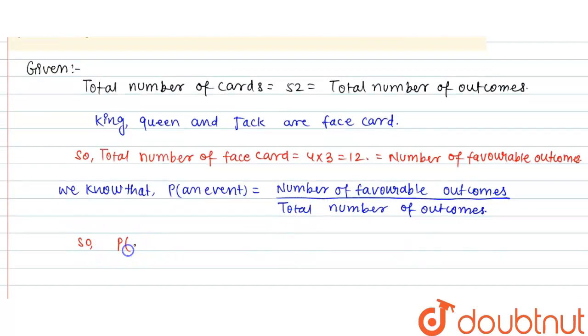So probability of a face card is equal to 12 upon 52. 12 can be written as 6 into 2, 52 as 26 into 2. 2 got cancelled. Again we can write 6 as 3 into 2, and 26 as 13 into 2. 2 again got cancelled, so this value is equal to 3 upon 13.